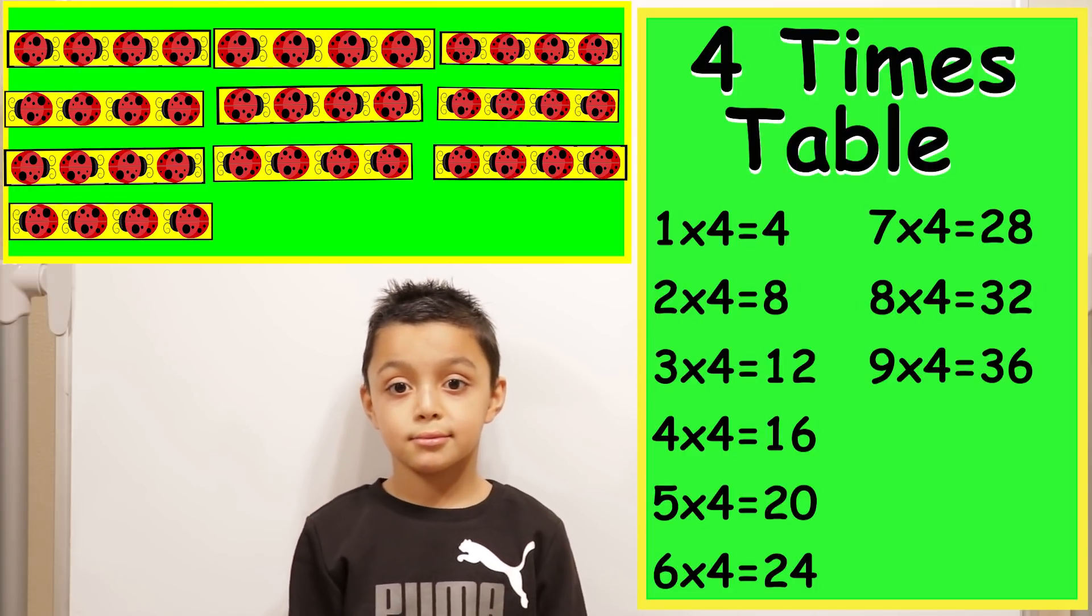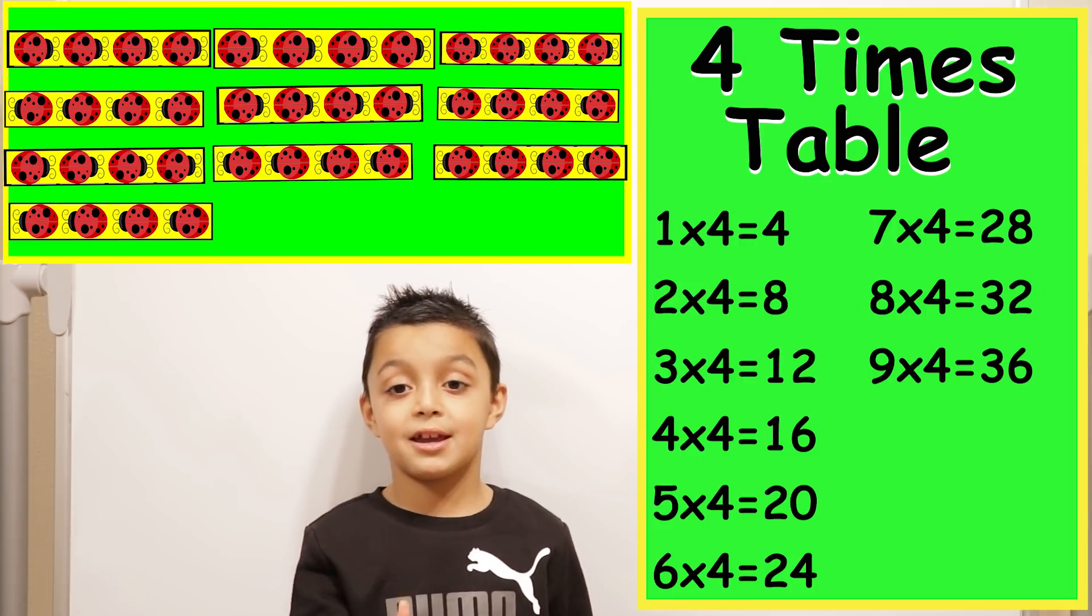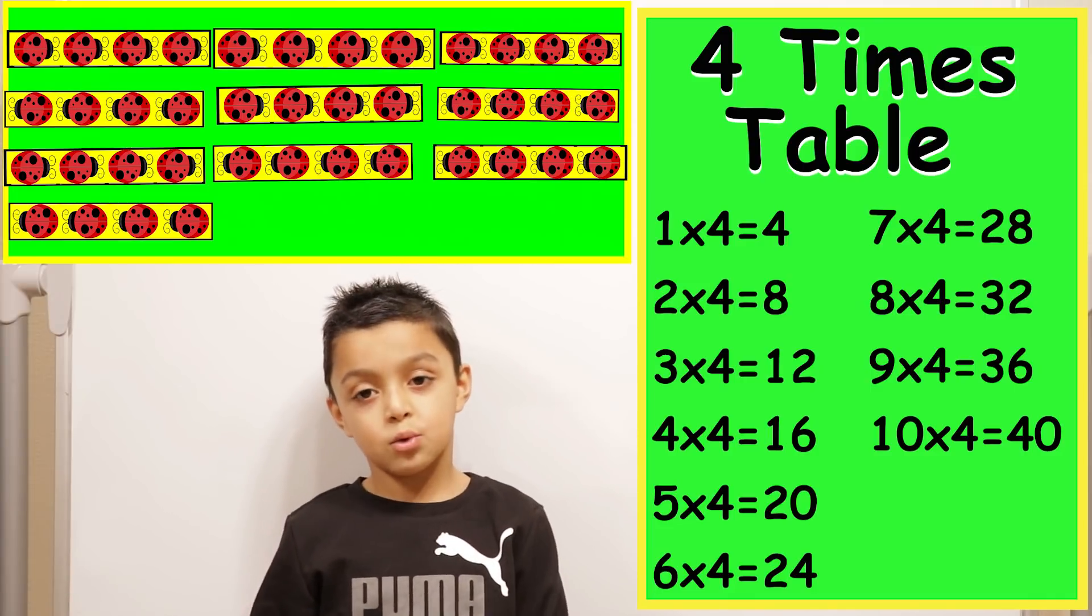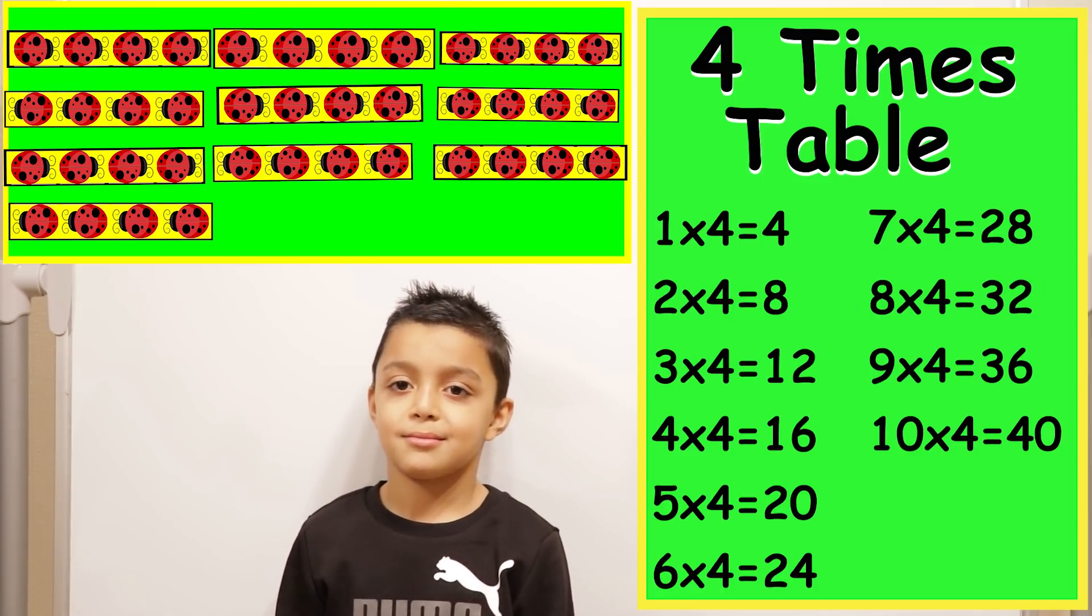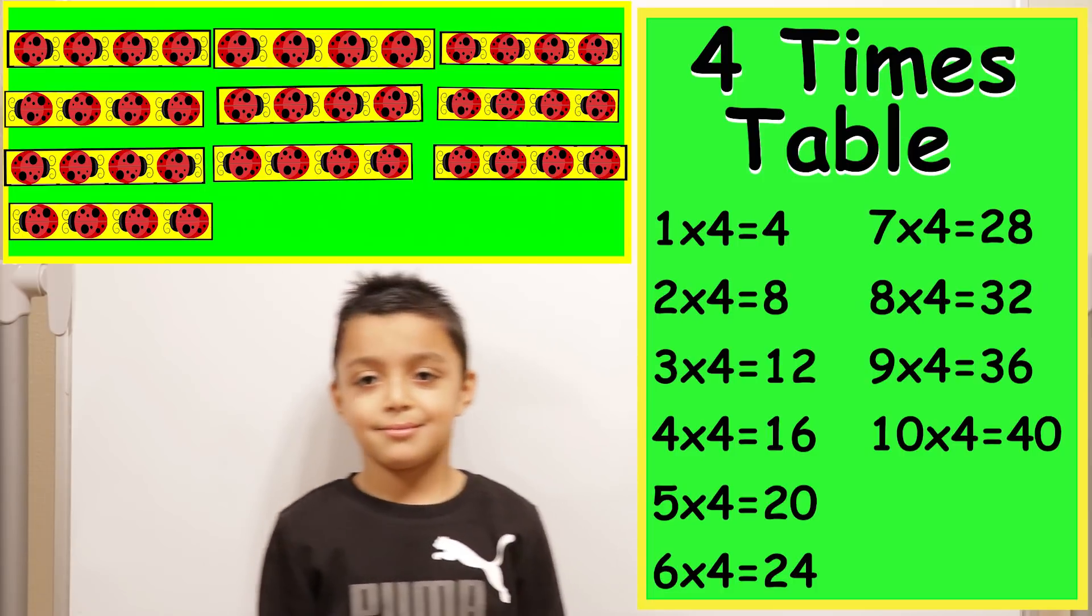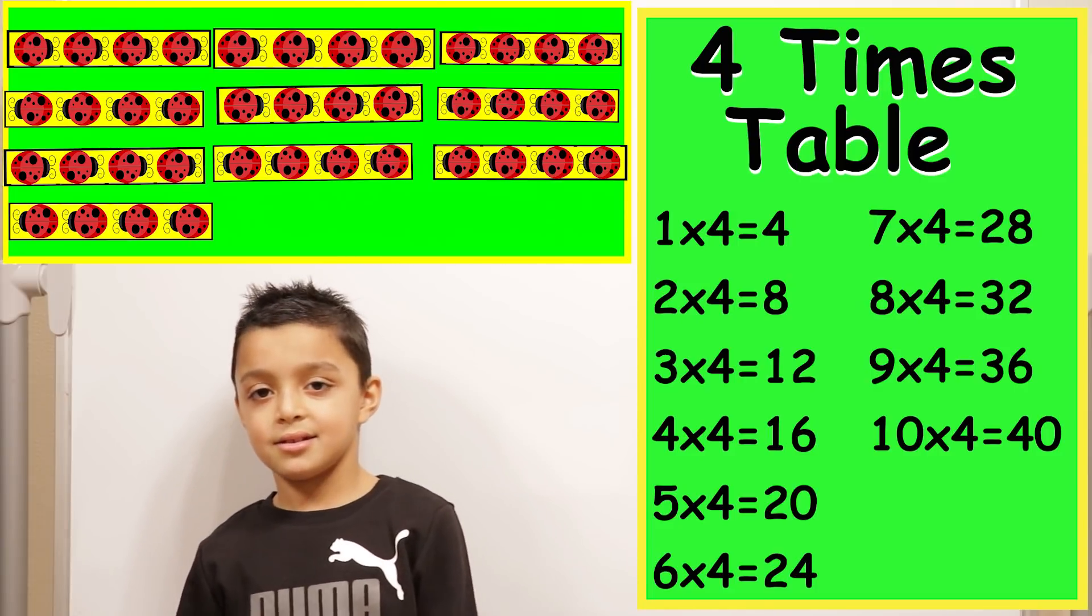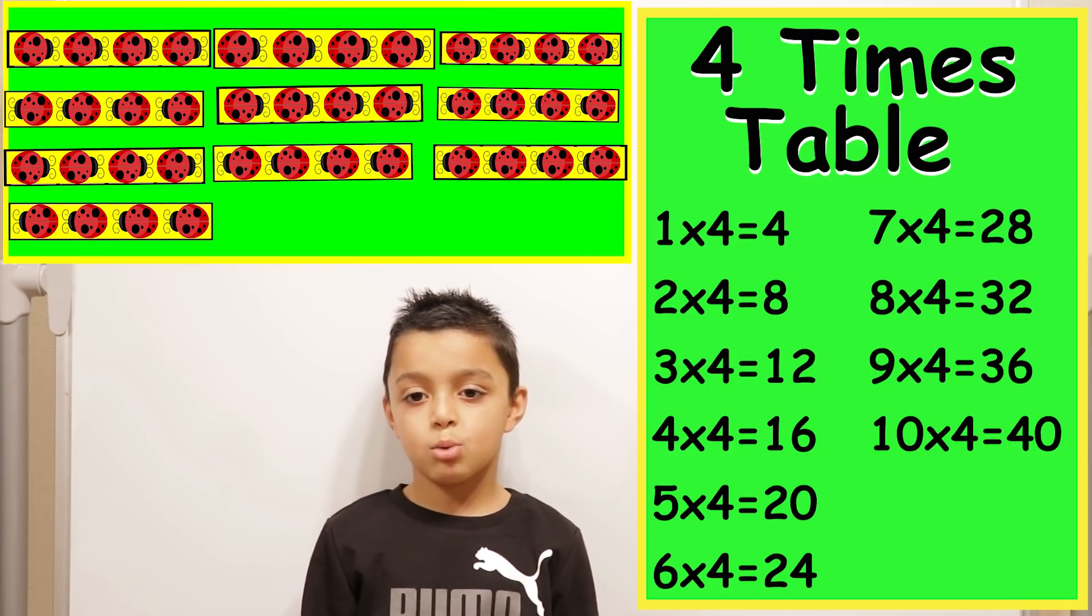Ten times four. Thirty-six, thirty-seven, thirty-eight, thirty-nine, forty. So ten times four equals forty. What's four times ten? Forty. Yes. And what happens, what is that, what's the word when we? Commutating. Commutating. When we swap the numbers around we will get the same answer. Good. So ten times four equals forty.